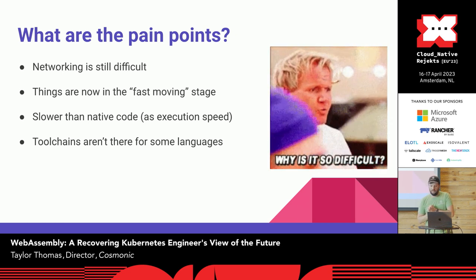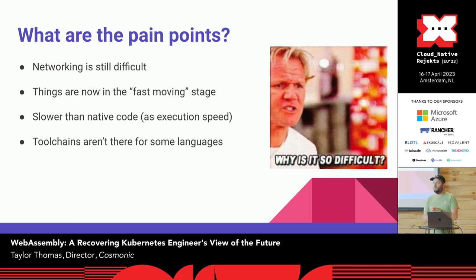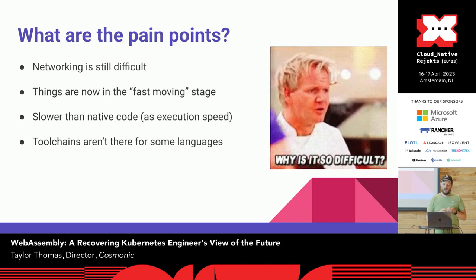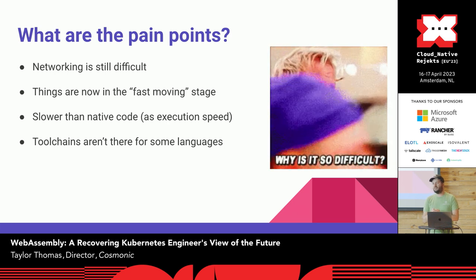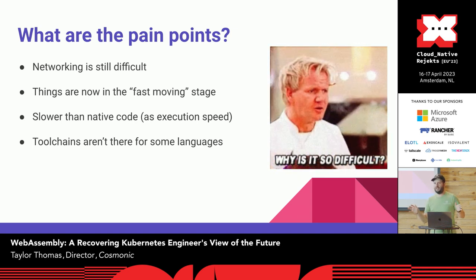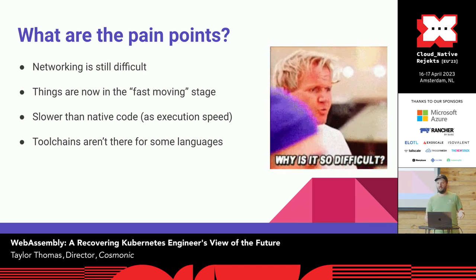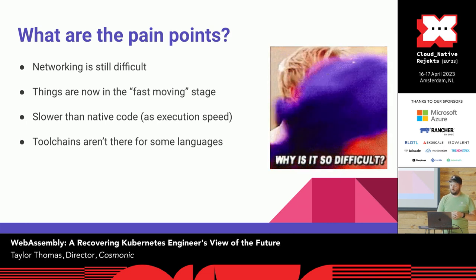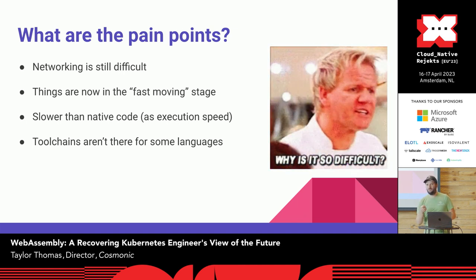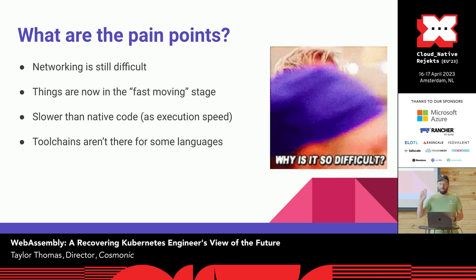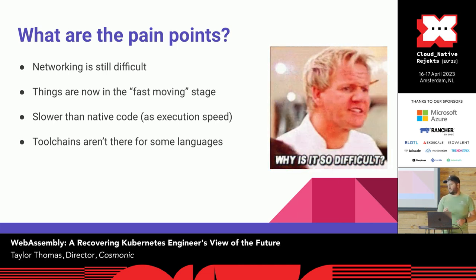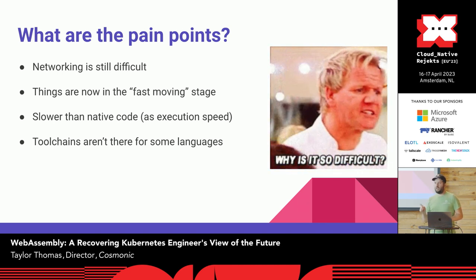What are the pain points inside of WebAssembly right now? Networking is still difficult, though we're moving along quickly. We had WASI sockets land about six months ago, and there's a lot of work around a standardized HTTP contract for the component model. Things are very much in the fast-moving stage — I call it the hemorrhaging edge, not even the bleeding edge. You will get cut if you're doing all the latest things because it's just so new. From an execution speed standpoint, you're never going to get as fast as native code. And the toolchains aren't really there yet for some languages, though that's getting better week over week.